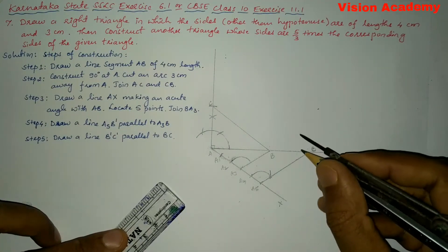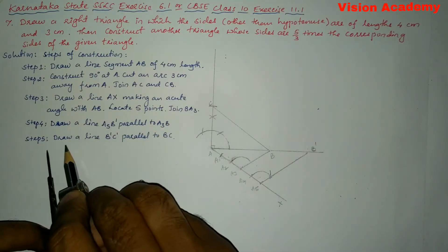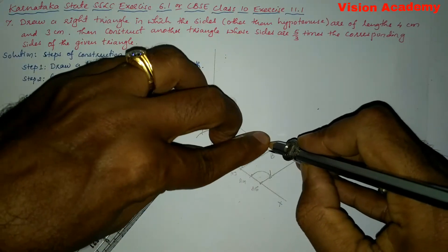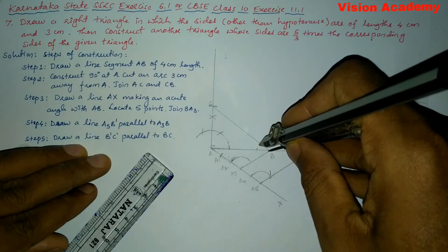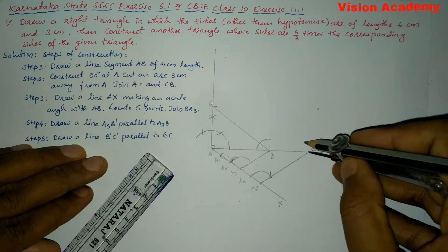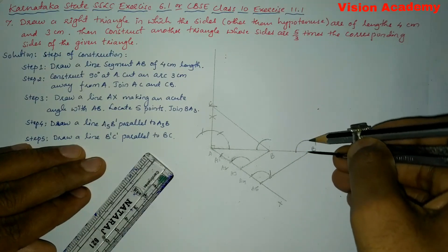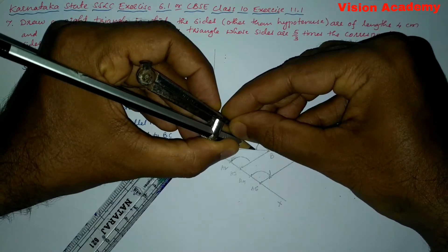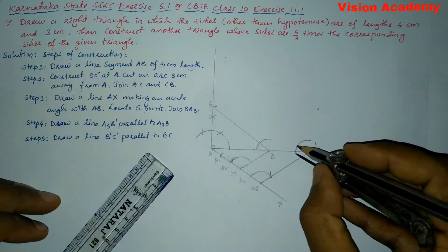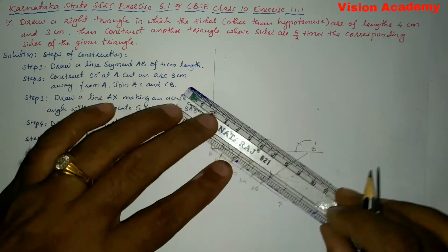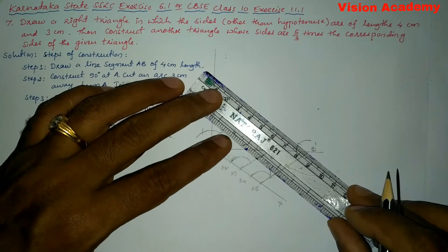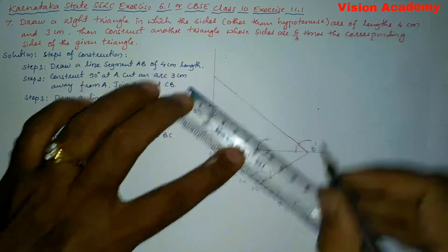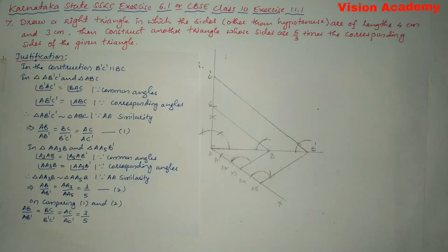Let us name this as B'. Now we are going to draw a parallel line to CB — that is B'C'. Step 5: draw a line B'C' parallel to BC. Let us draw the curve here, and from point B' let us draw another curve. Take the length of this particular curve, keeping on this point, and here we got one point through which we will be able to draw a line parallel to it. Let us name this as C'.